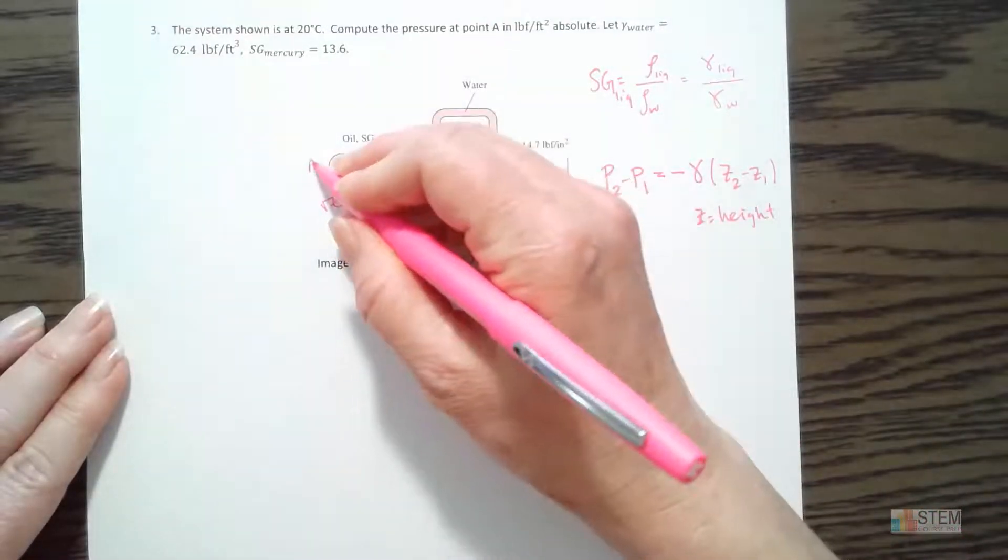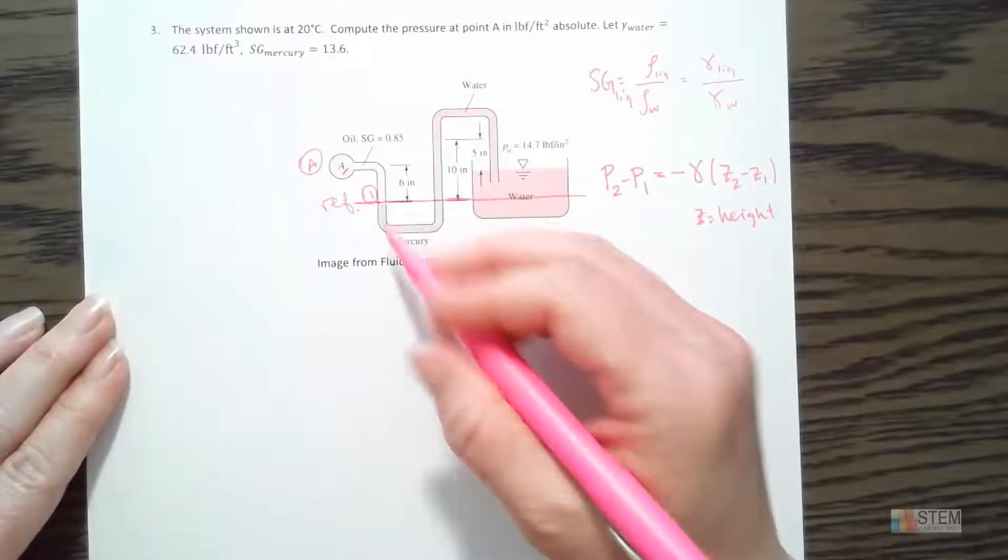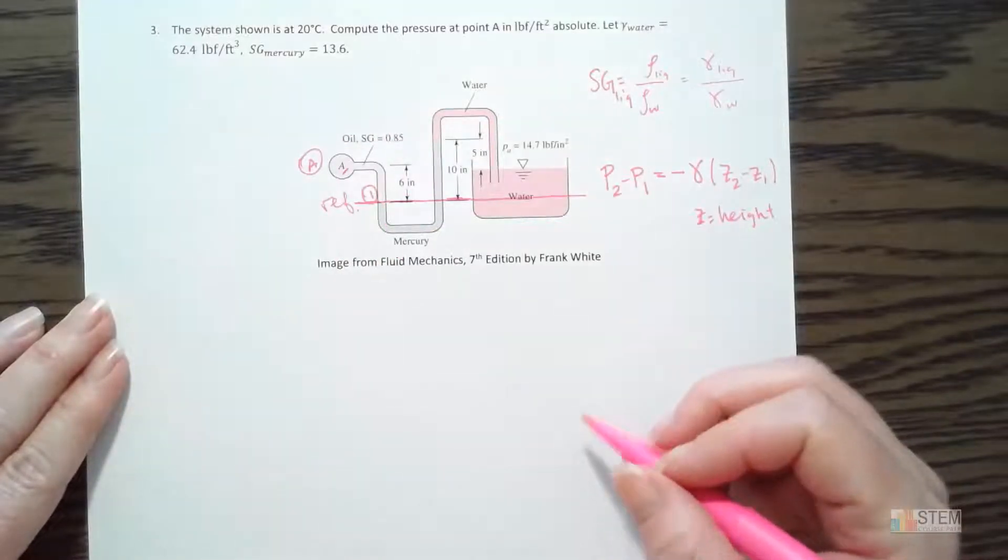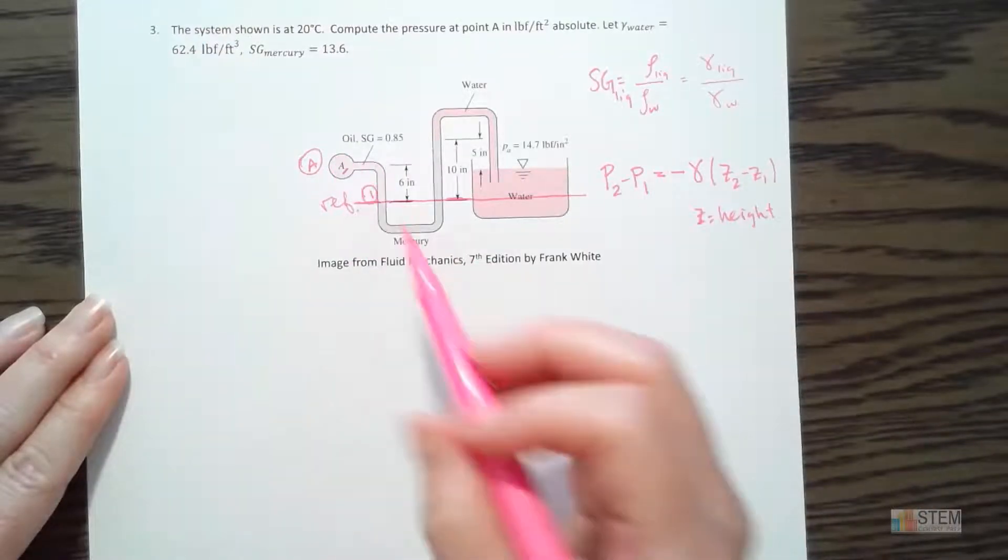Alright. So that'll be my reference line. I'm going to use that the rest of the time. Now what we're going to do, I always start on the left side and then work my way around the tube. Okay. So this is point A right here. And I'm going to label this point right here at the top of the mercury point one.